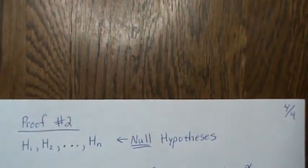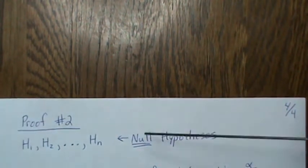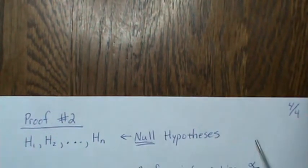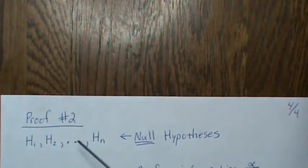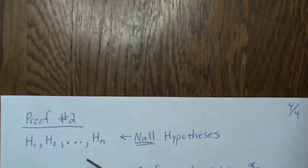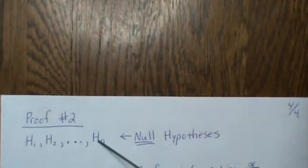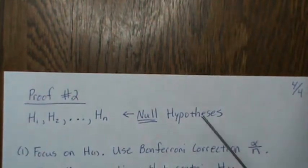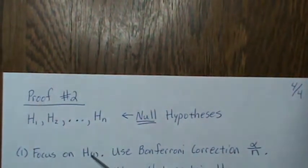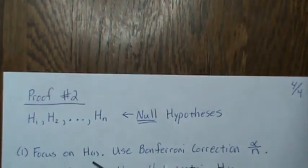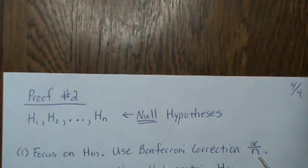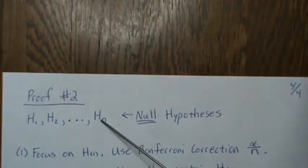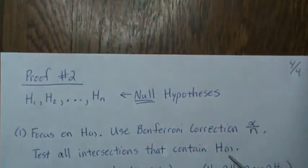Now here's the second proof, which uses the closed testing procedure and the Bonferroni correction. If we have N null hypotheses — for example, mean 1 equals zero, mean 2 equals zero, up to mean N equals zero, or that two treatments are equal — let's focus on H_(1), the hypothesis associated with the smallest p-value P_(1). We're going to use the Bonferroni correction of alpha over N since we have N hypotheses, and test all intersections that contain H1.